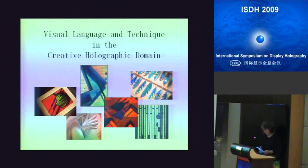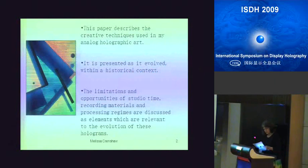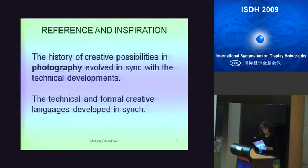This paper describes the creative techniques used in my analog holographic artwork, presented as it evolved within the historical context. The limitations and opportunities of studio time, recording materials, and processing regimes are discussed as elements relevant to the evolution of these works. Early techniques associated with hands-on holography are described, and the relation to content is explored. My background in art originated in photography, and the history of creative possibilities in photography evolved in sync with the technical developments in a similar way to that of holography.